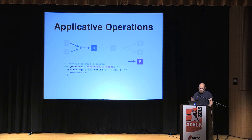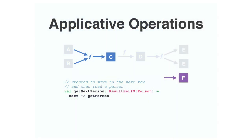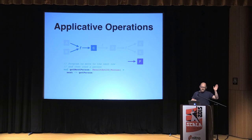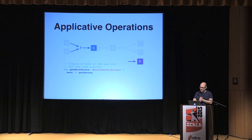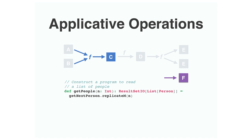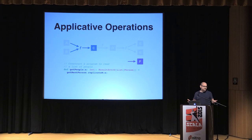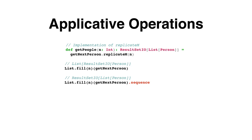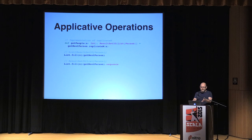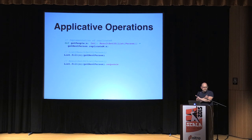What else can we do with Applicative? We can say: let's take a program that moves to the next row and tells us yes or no if there's another row, run that, throw the boolean away, and call getPerson, returning the result — composing these things together and ignoring the result on the left. And we can take that getNextPerson and replicate it some number of times — now we have a program that will fetch a list of people. First we make a list of programs by calling List.fill and passing the program in. Then we call sequence, which flips the type constructors — instead of a list of programs, we have a program that computes a list, which is what we want.